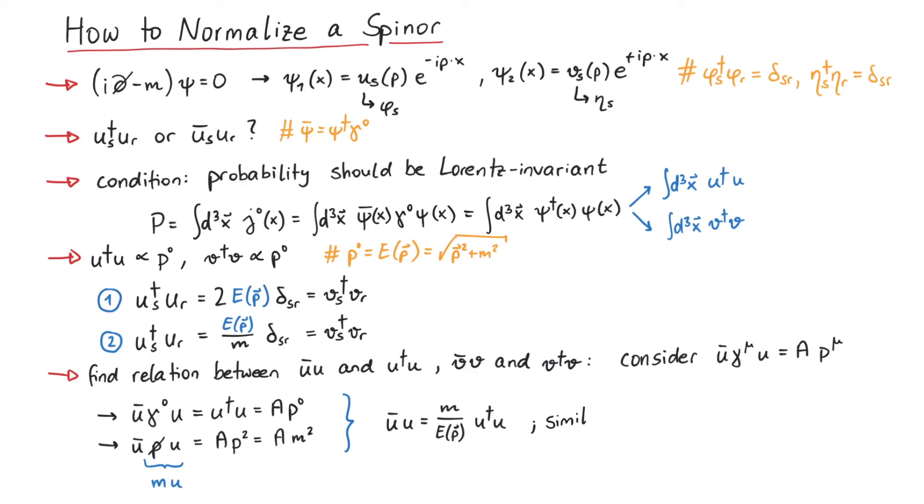And for the antiparticle, we have v bar v is equal to minus mass over energy times v dagger v. In summary,